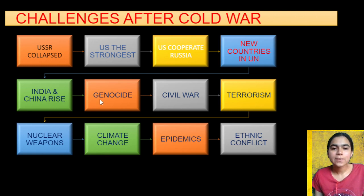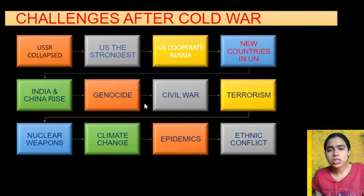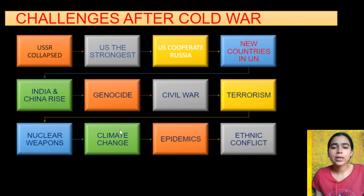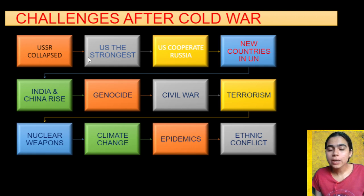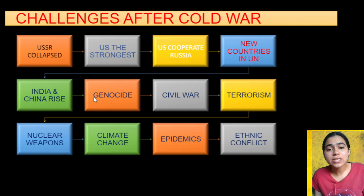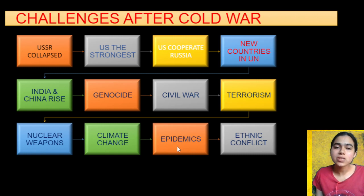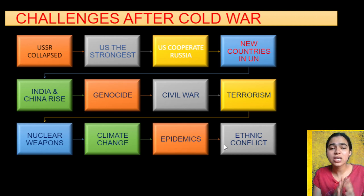India and China grew. Genocide means terrorism increased and people's deaths increased. Civil wars were happening — people of their own country were fighting. Nuclear weapons increased in the world. Climate change occurred. So new challenges emerged: genocide, civil wars, terrorism, nuclear weapons increase, climate change, epidemics — like coronavirus, where many people fell ill and died — and ethnic conflicts, where people of one ethnic group targeted others.